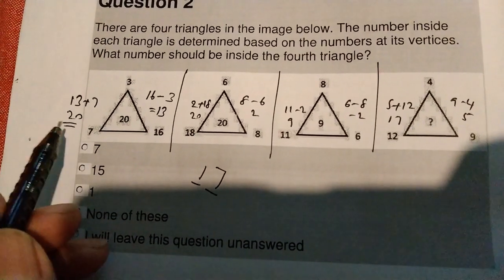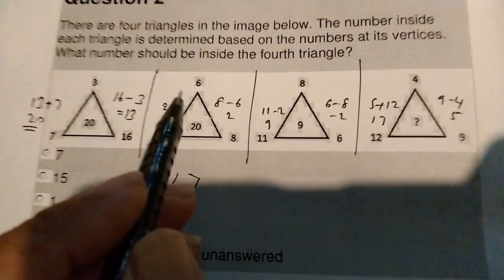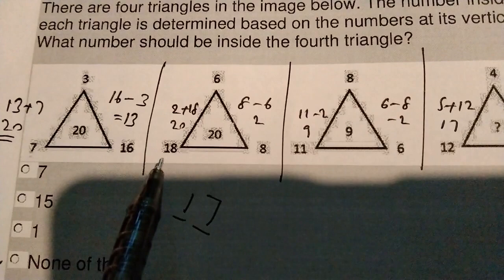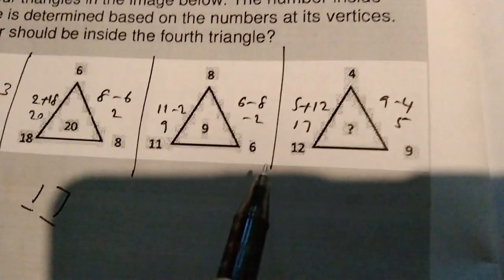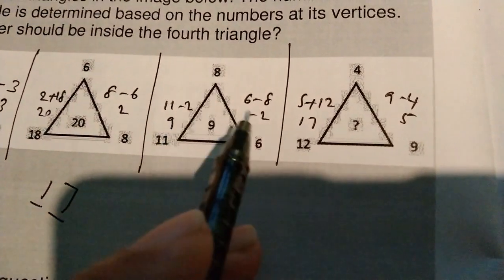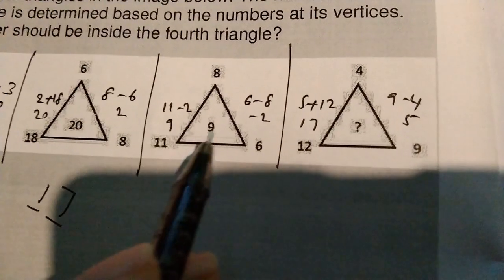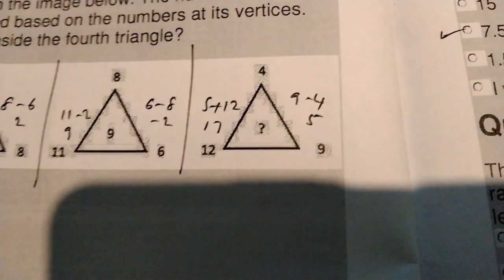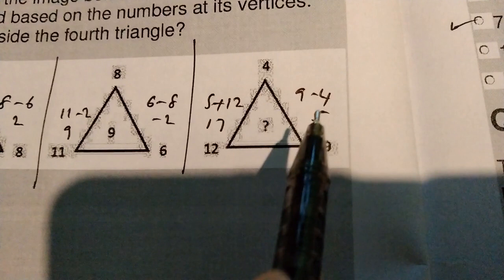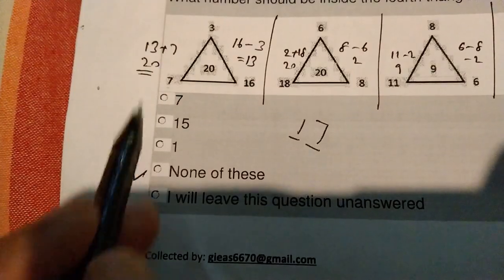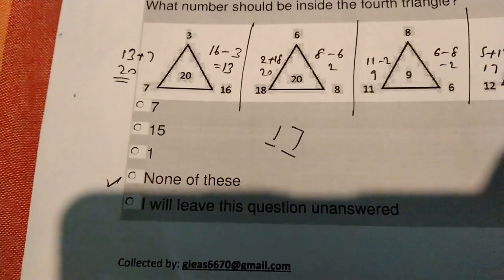The pattern: 16 minus 3 is 13, 13 plus 7 is 20. Check: 8 plus 6 is 2, then 2 added to 18 is 20. Next: 6 minus 8 is minus 2, and 11 minus 2 is 9. Similarly, 9 minus 4 is 5, and 5 added to 12 is 17. So the answer is 17, but 17 is not in the options — so the answer is 'none of these.' The 7 and 1 given are there to mislead you.